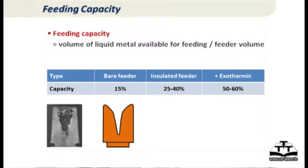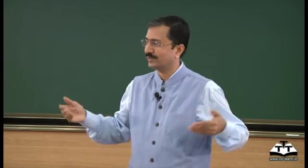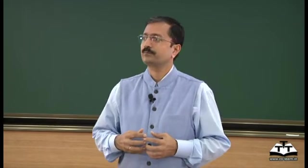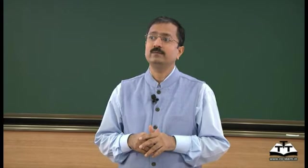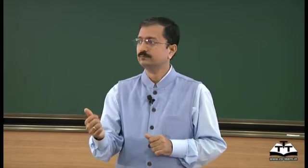We now define feeding capacity — an important concept that determines feeder design. Feeding capacity is the volume of liquid metal actually available for feeding in a feeder, divided by feeder volume. Do not think that if the feeder volume is 100 cc, you have 100 cc of feed metal — the capacity is only about 15 percent for a normal uninsulated feeder. So if your feed metal volume requirement is 15 cc, you cannot put a 15 cc feeder; you need to put a 100 cc feeder.